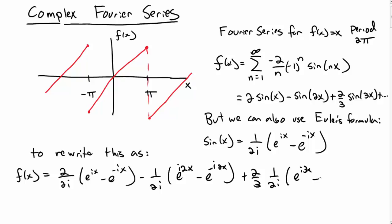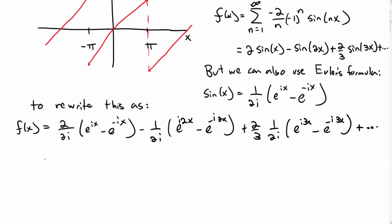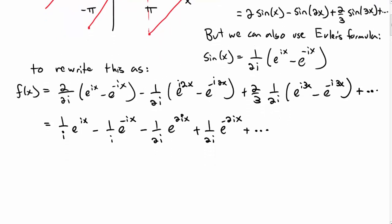And so on for sin(3x), etc. We can keep going. And so let me just multiply this out. So I have 1/i e^(ix) - 1/i e^(-ix). And so on and so forth for e^(2ix) and e^(-2ix). So I have various coefficients on these complex exponential terms.